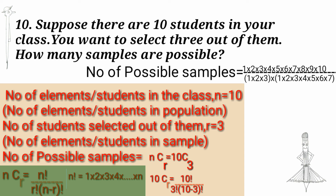10C3 is equal to 10 factorial divided by 3 factorial into (10 minus 3) factorial. 10 factorial is equal to 1 × 2 × 3 × 4 × 5 × 6 × 7 × 8 × 9 × 10. And 3 factorial is equal to 1 × 2 × 3. 7 factorial is equal to 1 × 2 × 3 × 4 × 5 × 6 × 7. The result is equal to 120.